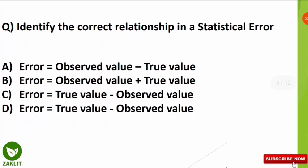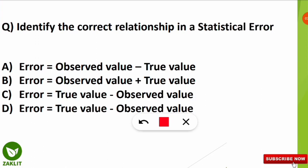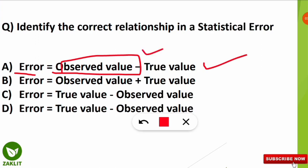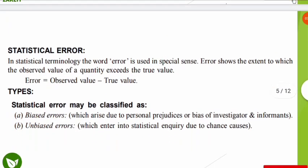The next question is: identify the correct relationship in statistical error. The correct relationship between the observed value and true value is option A: Error = Observed Value − True Value. This is the formula that gives the error of a statistical test.